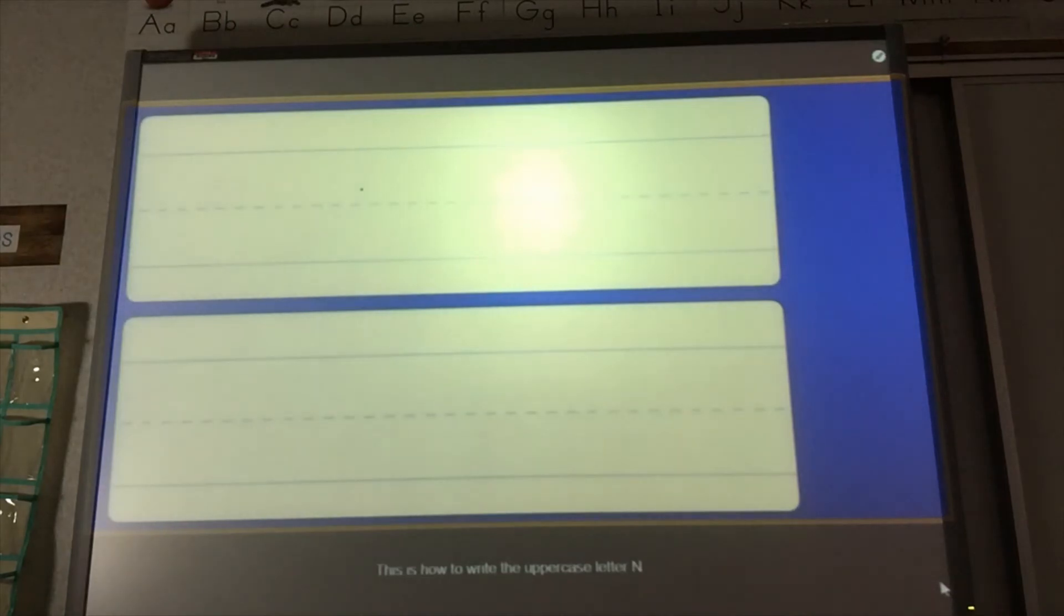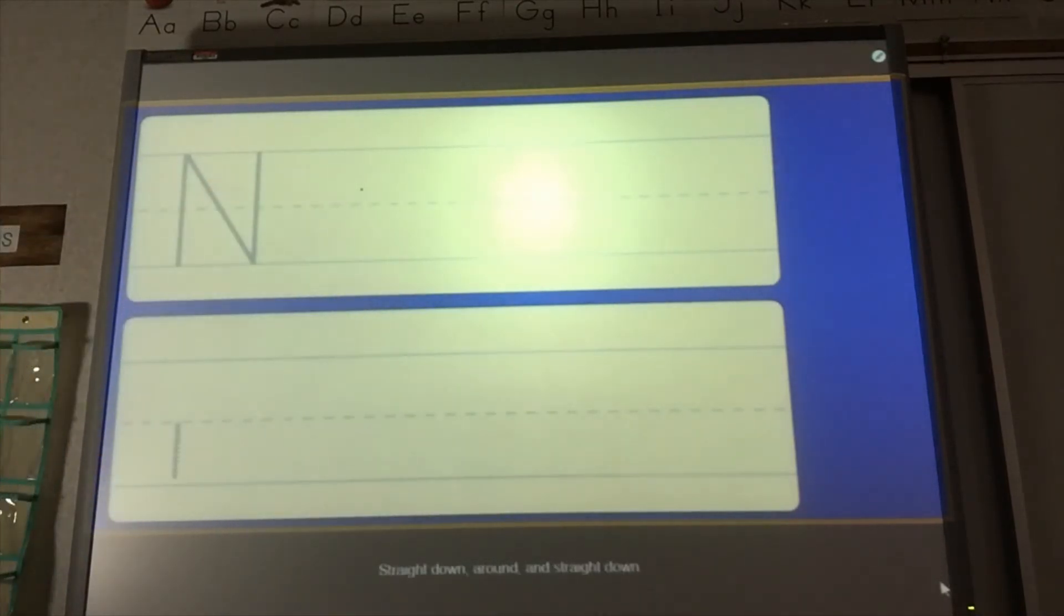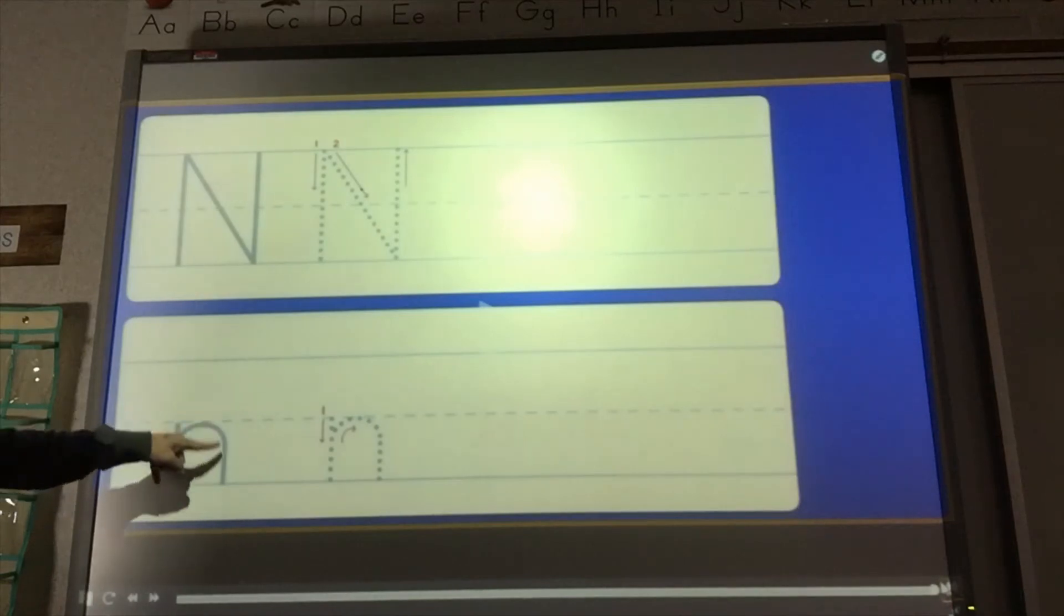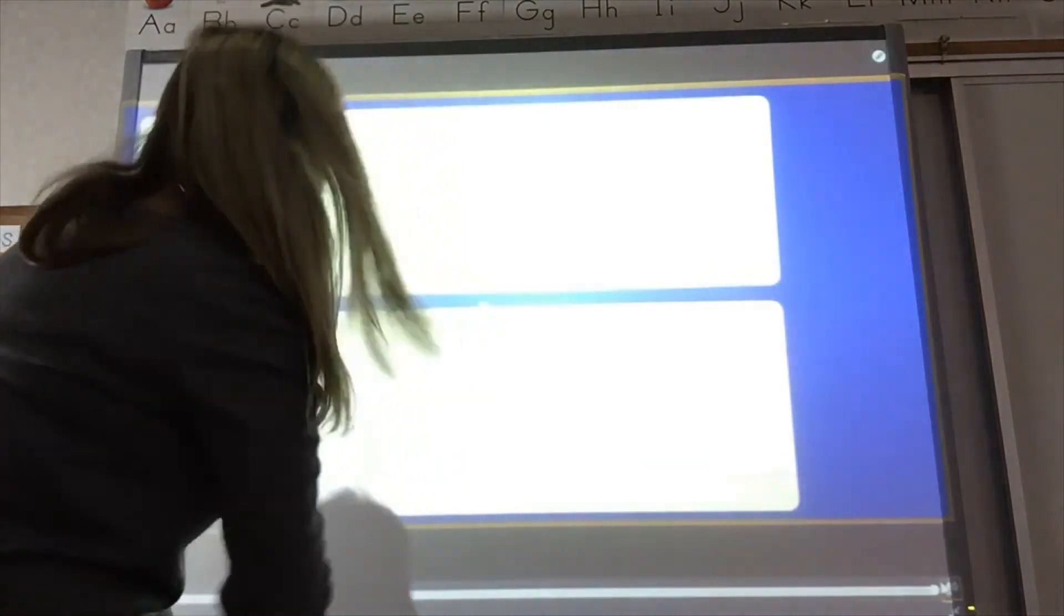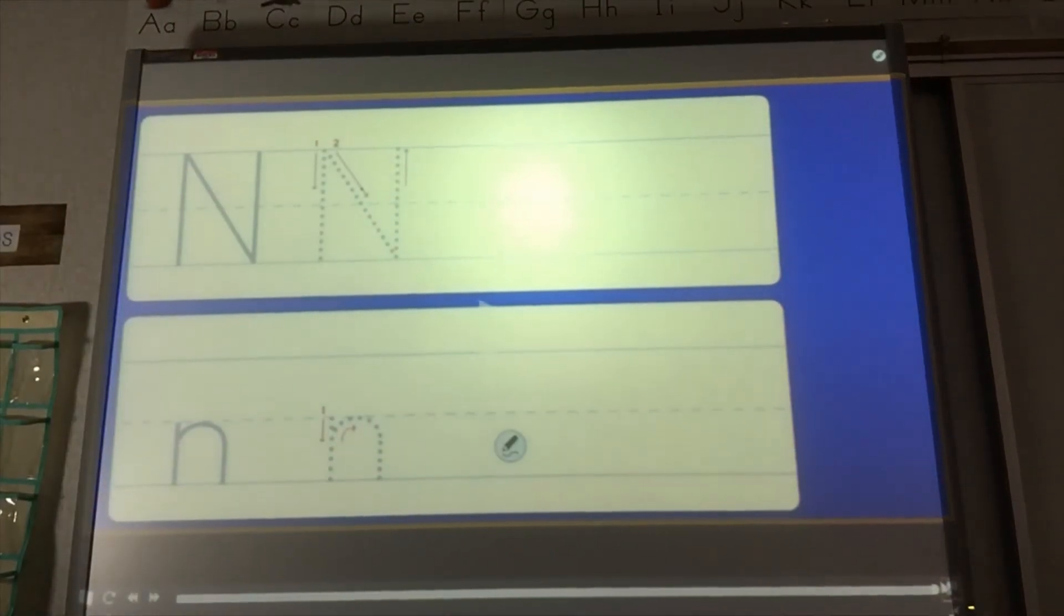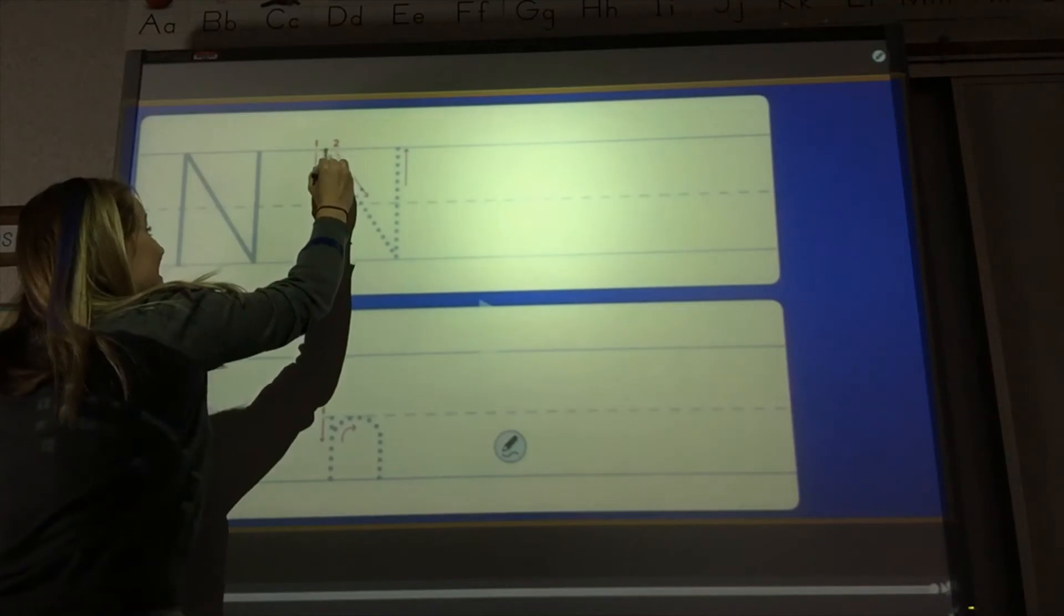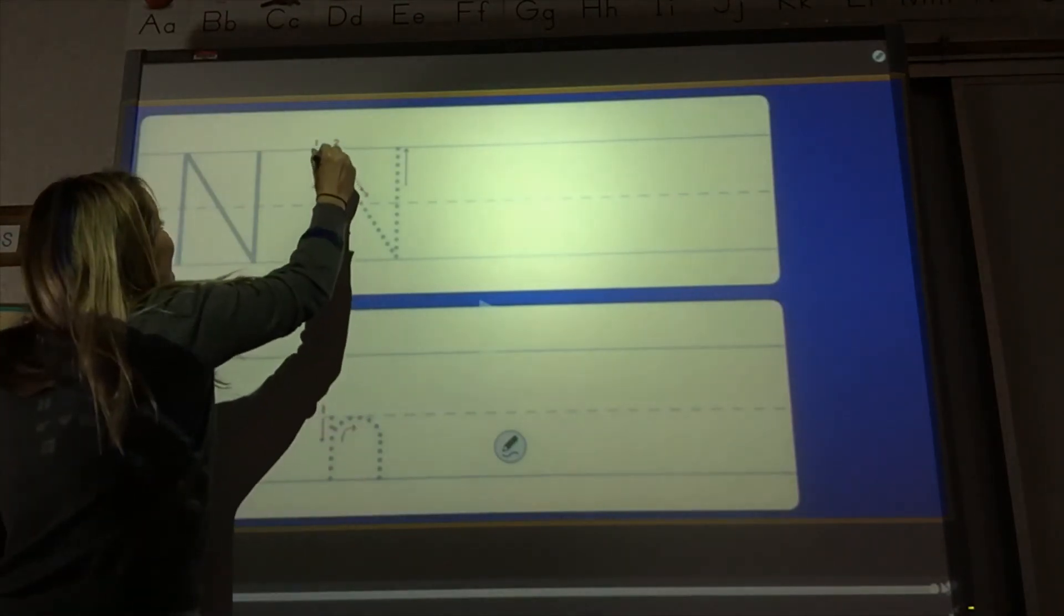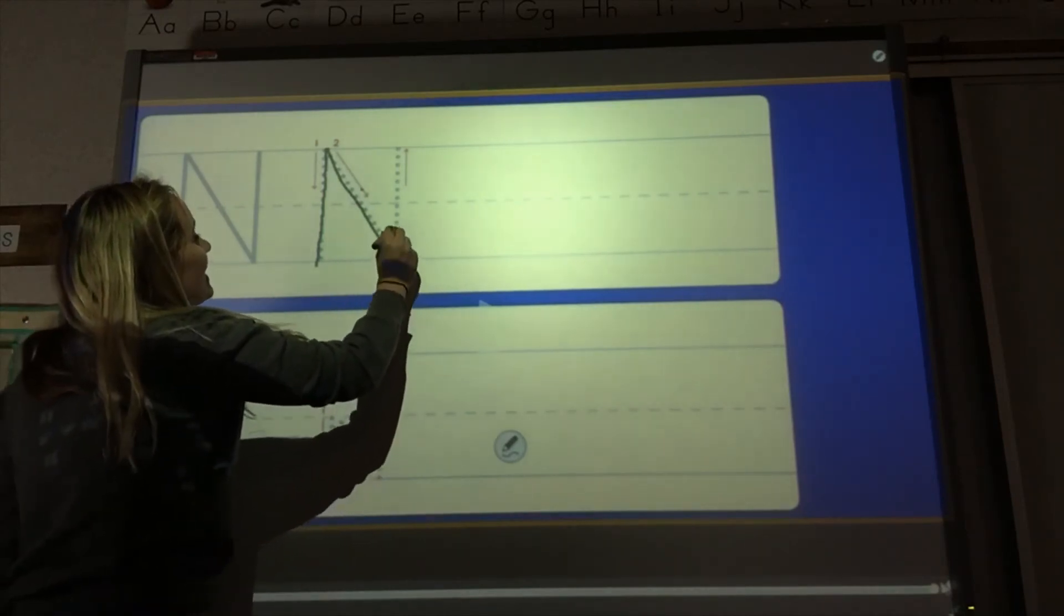Let's practice the uppercase N. Okay, we go straight down from the top, then we make a slant and go back up to the top. This is how to write a lowercase n. Straight line down and then we curve around like a little hump. We're going to try it together. Get your finger out and trace the screen with me. Here we go. Step one on the top. For an uppercase N, draw a straight line from top to bottom. Then step two, make a slant and bring it back to the top.